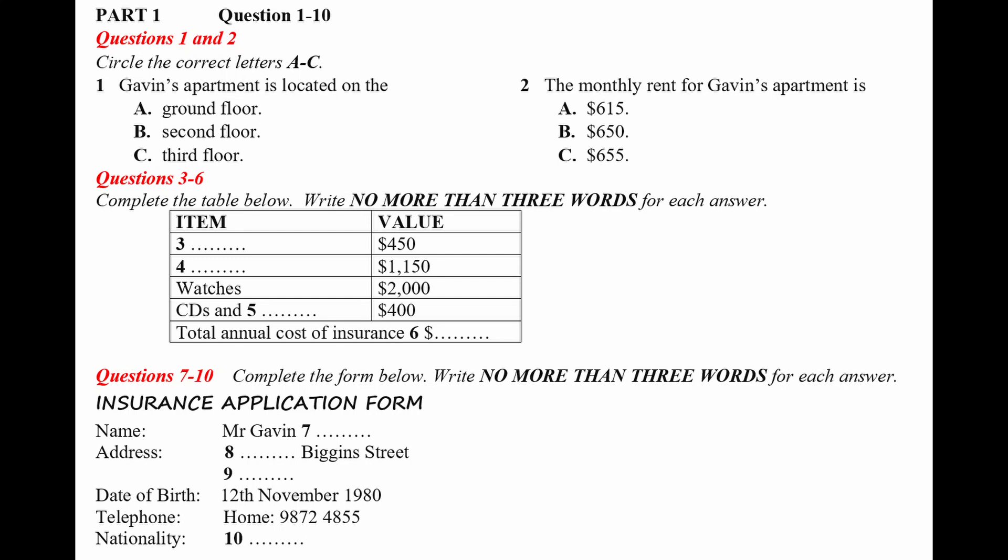And what things did you want to insure? Well, what do you recommend? Well, the most important things are those which you would normally find in a home. Things like the television, fridge and so on. I see. Well, I've got a fridge and a stereo system, which I've just bought from a friend. And how much did you pay for the fridge? $450. Sorry, $50 or $15? $50.